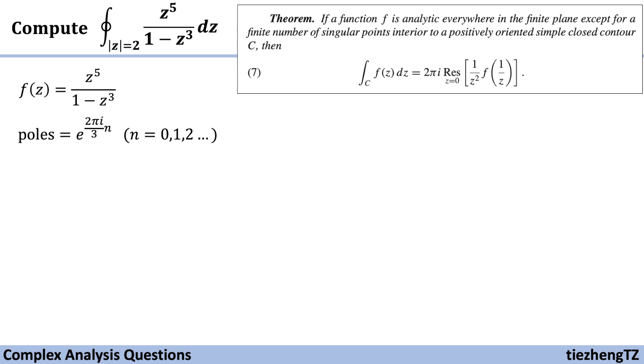So we know we can use the theorem to calculate this question. Next, for the function, we need to replace z with 1/z. So we have f(1/z), which is 1/z^5 minus z^2. And then next, we need to find the residue of this function, 1/z² times f(1/z).